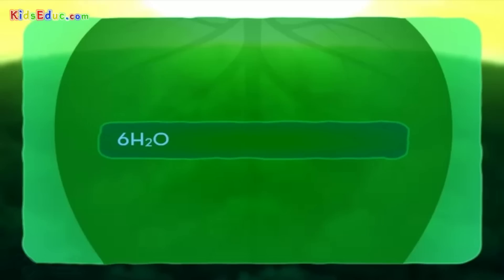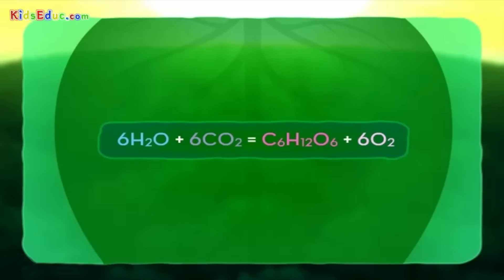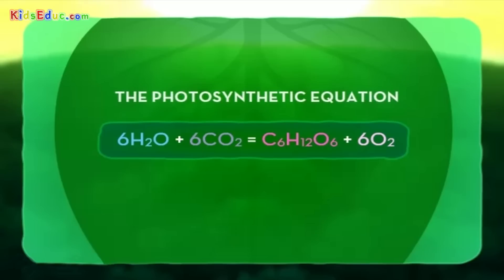The equation looks like this: 6H₂O plus 6CO₂ equals C₆H₁₂O₆ plus 6O₂. That is known as the photosynthetic equation, and it is at the root of life as we know it. Pretty simple, isn't it?